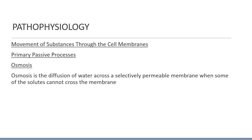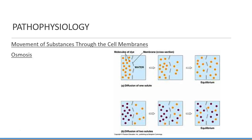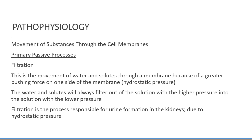Osmosis is the process of water movement — the diffusion of water across a selectively permeable membrane when some solutes can't cross that membrane. What the water attempts to do is dilute the solution down to where the solutes are equal on both sides of the membrane. Filtration is also a passive process — the movement of water and solutes through a membrane because of greater hydrostatic pressure on one side. Water and solutes always filter from the solution with higher pressure to lower pressure. Filtration is responsible for urine formation in the kidneys.